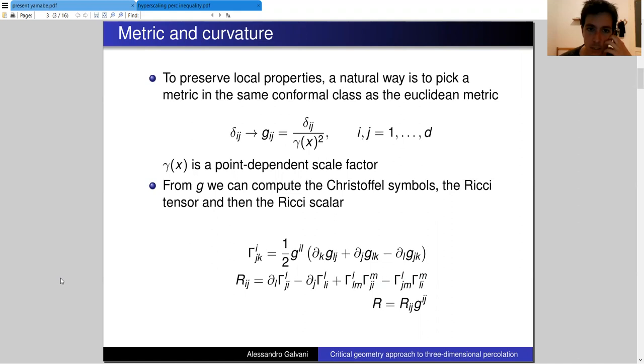The only changes of the metric that we can allow, since we want to maintain a system which is locally Euclidean, are conformal changes, which means that we just have to select a function gamma of x, which acts as a point-dependent scale factor.